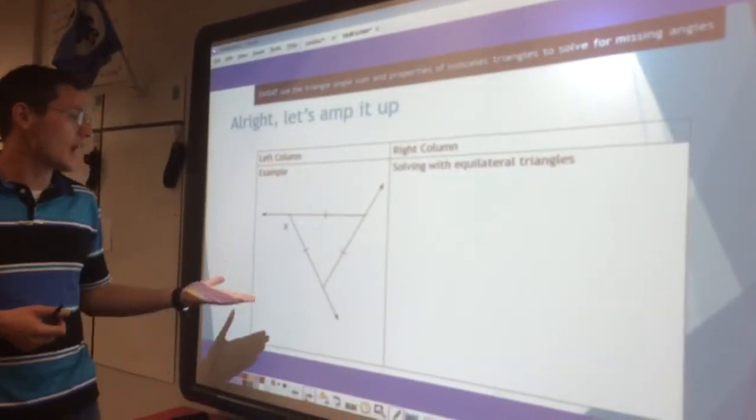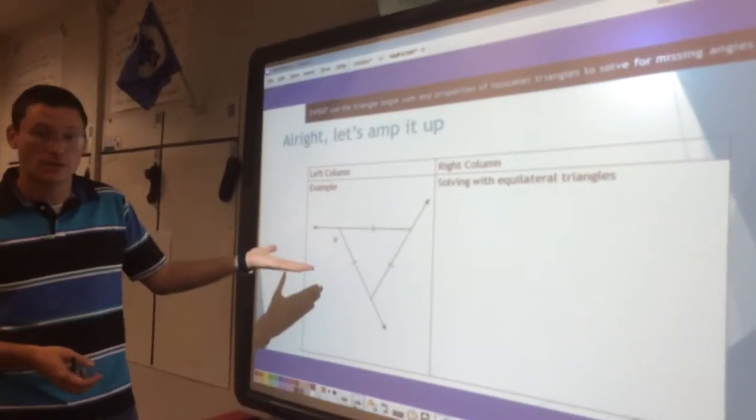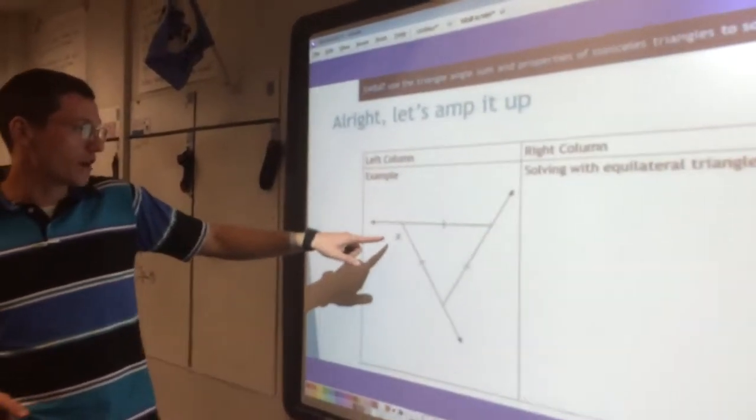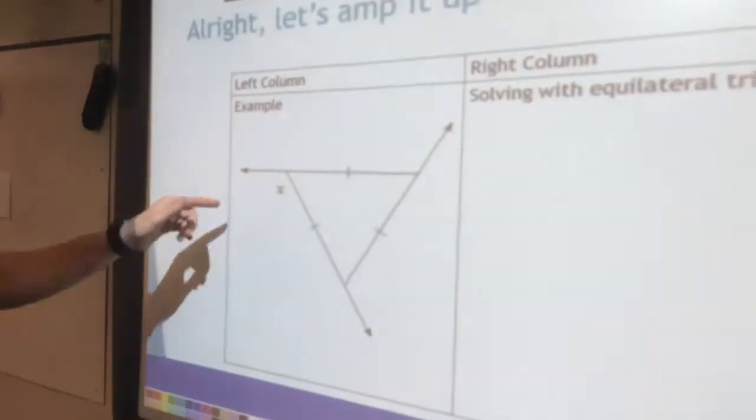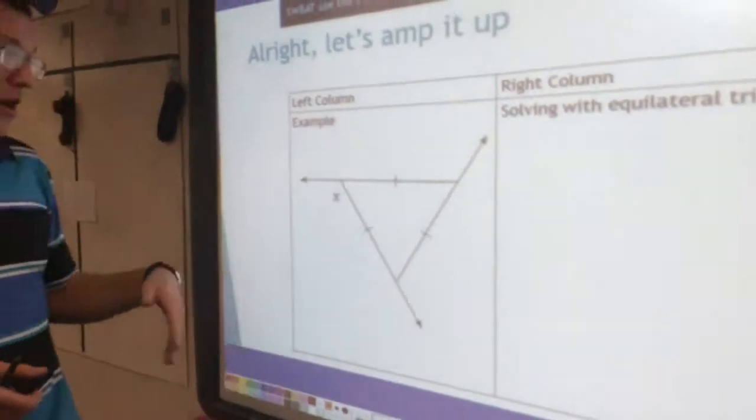All right guys. And the other question that we can ask you with equilateral triangles looks something like this. You'll notice we're looking for x again, but this time x is on the outside of our triangle.